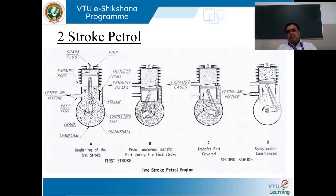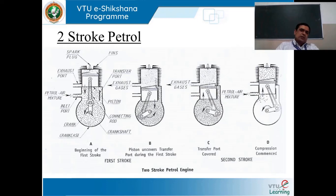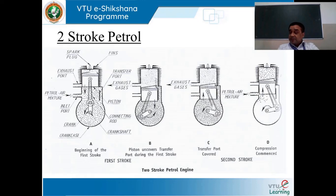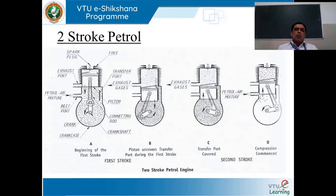When we clearly examine these schematics, we will understand comprehensively how compression and working strokes have been executed. Ultimately, on executing both strokes, the exhaust gases will be sent to the surroundings — a process we call scavenging. That is why we normally calculate scavenging efficiency with reference to two-stroke engines. These are the salient points one has to know in connection with two-stroke petrol engines.